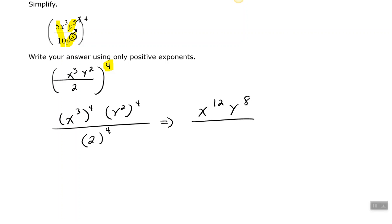And then 2 to the 4th. That means 2 times 2 times 2 times 2, or 16. Alright. Let's look at another one.